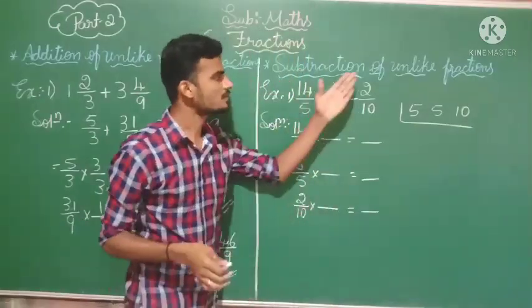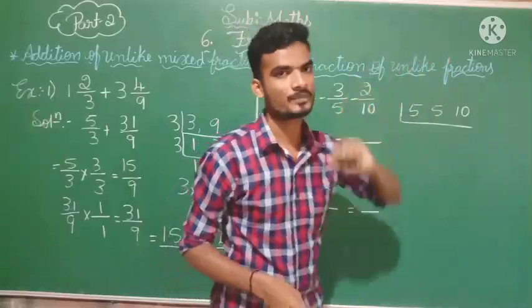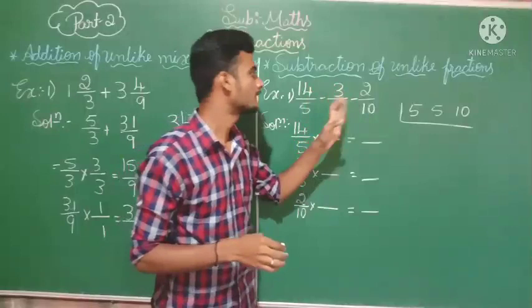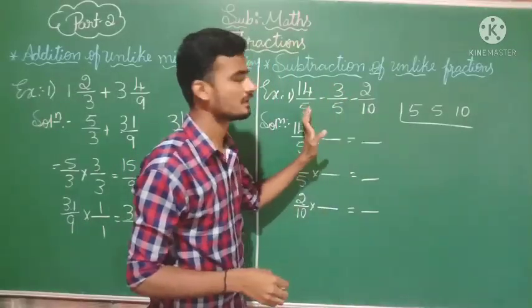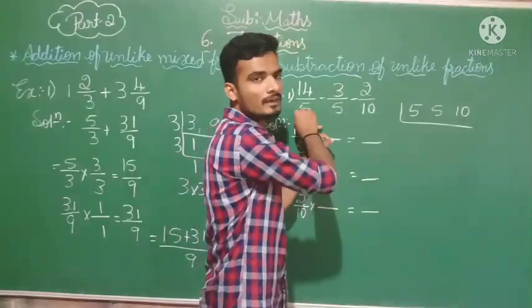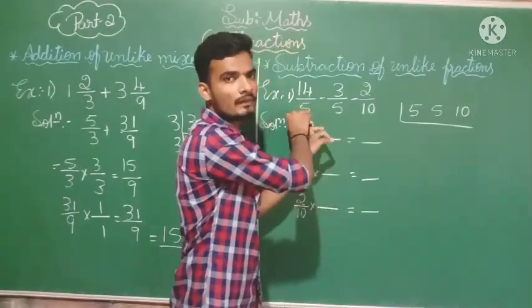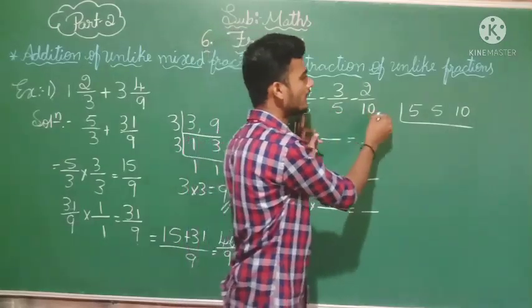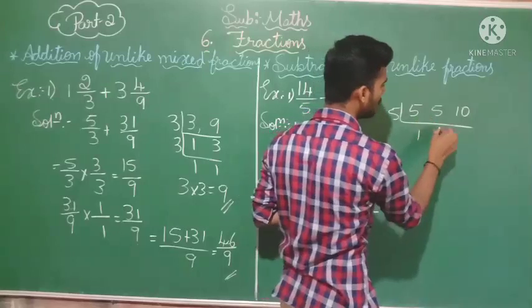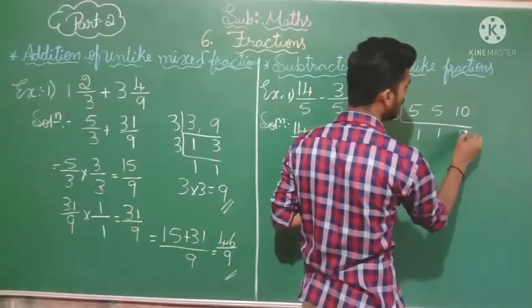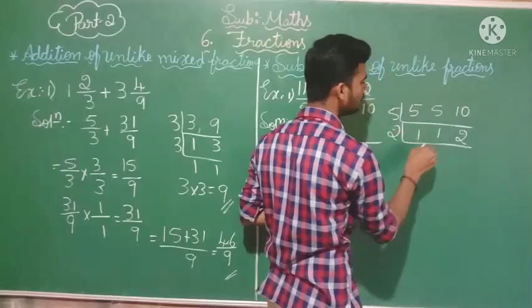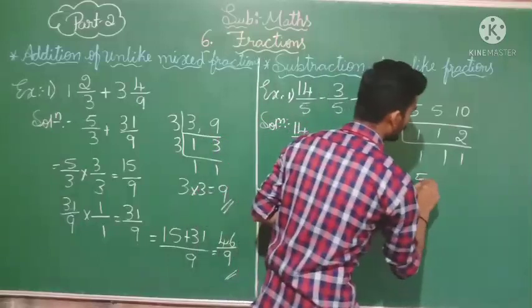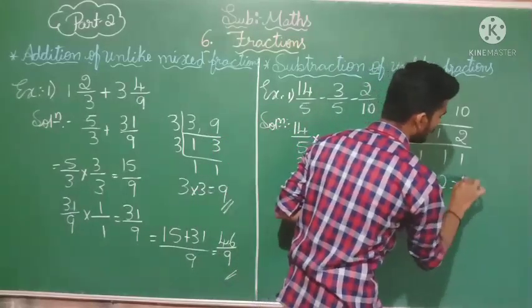Next we will see subtraction of unlike fractions. The method is the same as addition — just subtract instead. For unlike fractions, first convert to like fractions by taking the LCM of the denominators. Denominators are 5, 5, and 10. 5 twos are 10. LCM = 5 × 2 = 10.